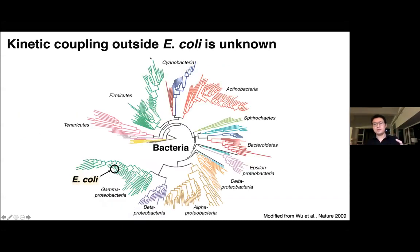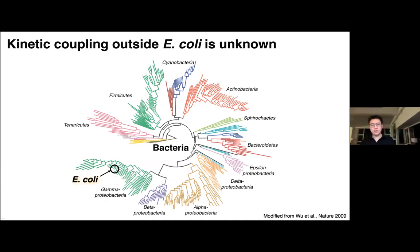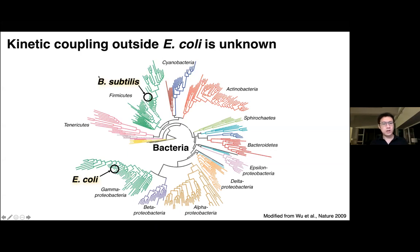These examples illustrate how transcription-translation coupling is considered a cornerstone of gene regulatory processes in bacteria and deeply influences how we think about their genomes. But most of the evidence for coupling comes from E. coli, which only represents a small island in the large bacterial world that has been on earth for billions of years. Whether kinetic coupling is indeed occurring in most species is actually unknown, even for another well-studied model organism, Bacillus subtilis. So we're going to focus today's talk on the distinction between Bacillus subtilis and E. coli.